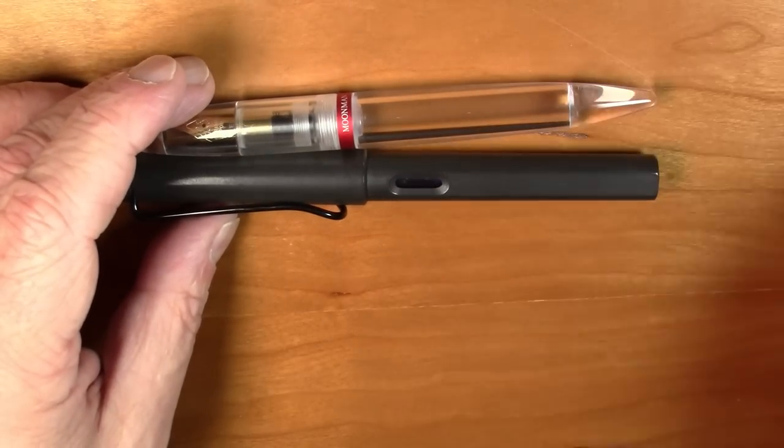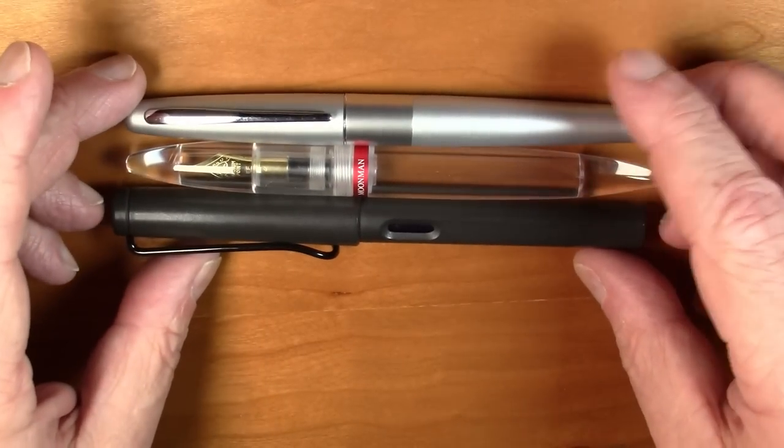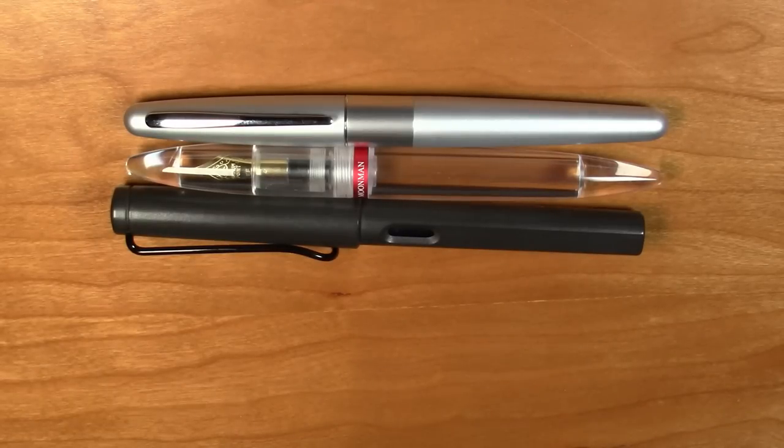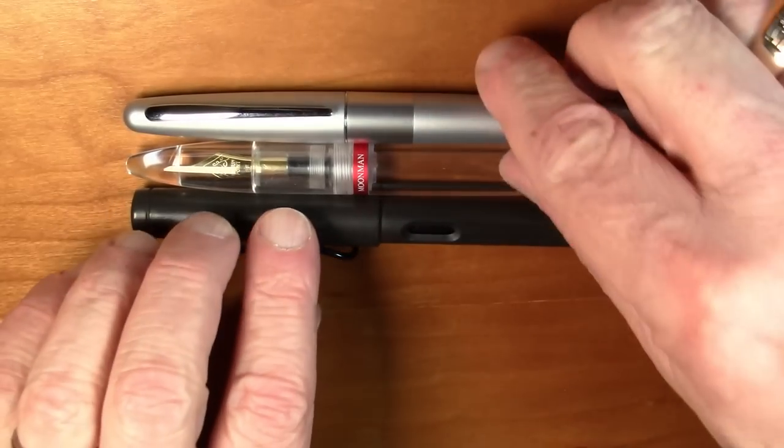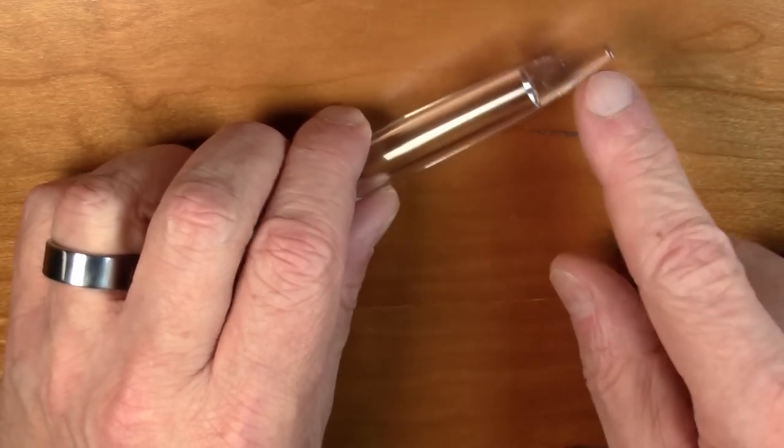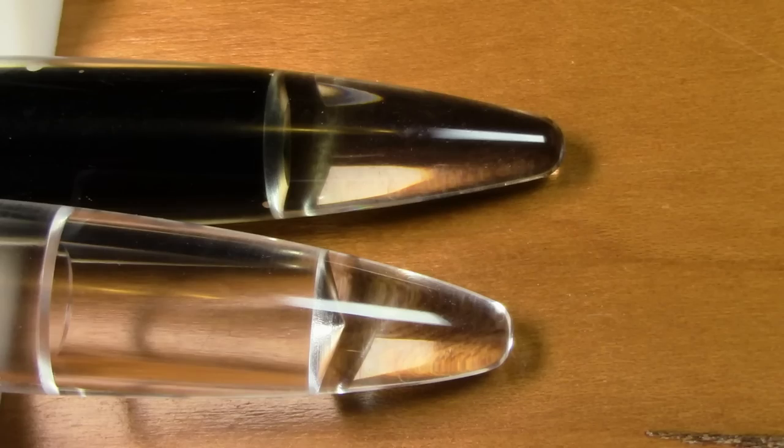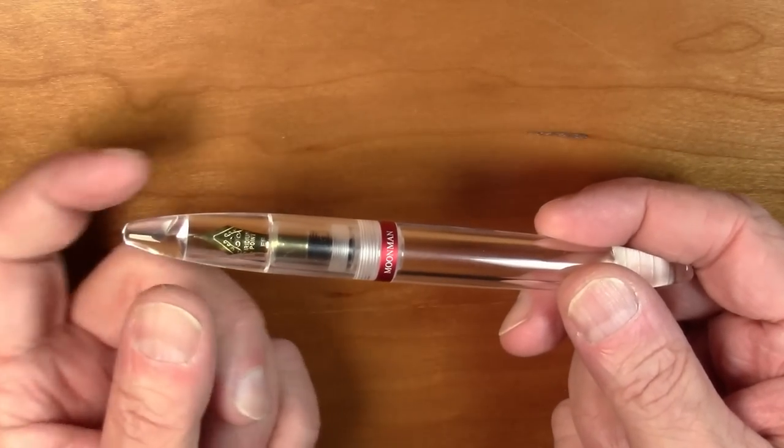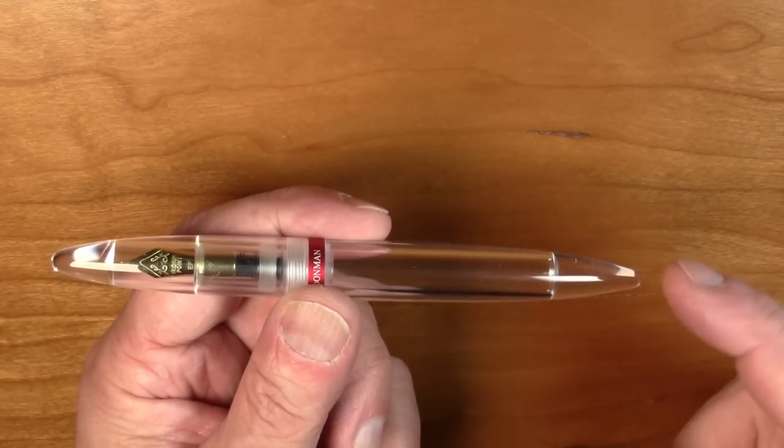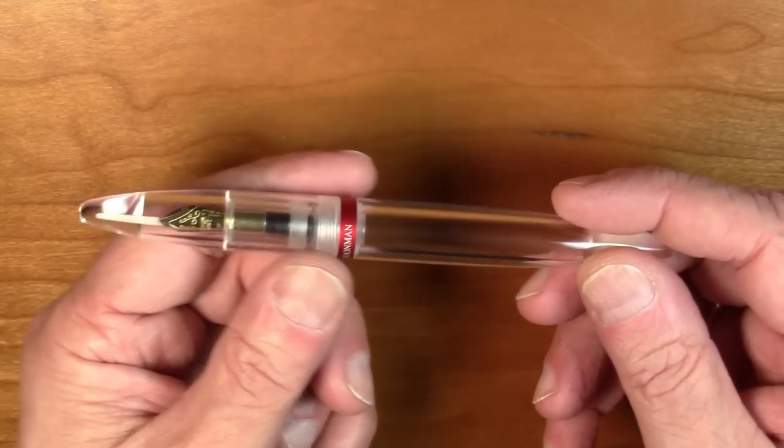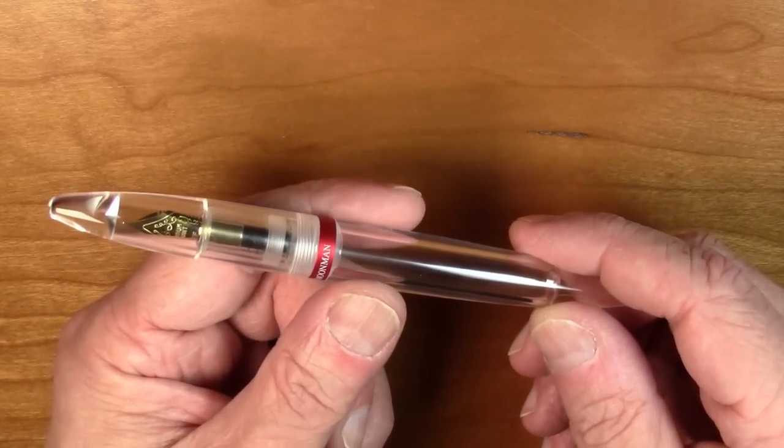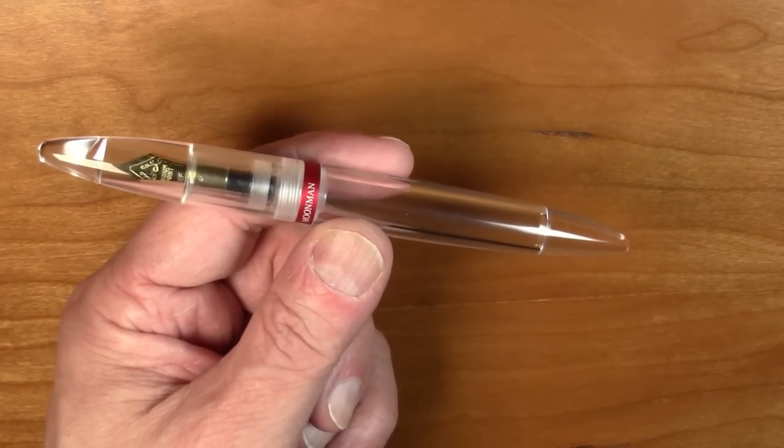Let's compare it in size to a Lamy Safari and a Pilot Metropolitan, so they're all right about the same size. I like these chunks of acrylic at the end of the pen. Reminds me very much of the Opus 88 Koloro Demonstrator which has these cylindrical chunks of acrylic on there. So I kind of like these chunky bits of acrylic.